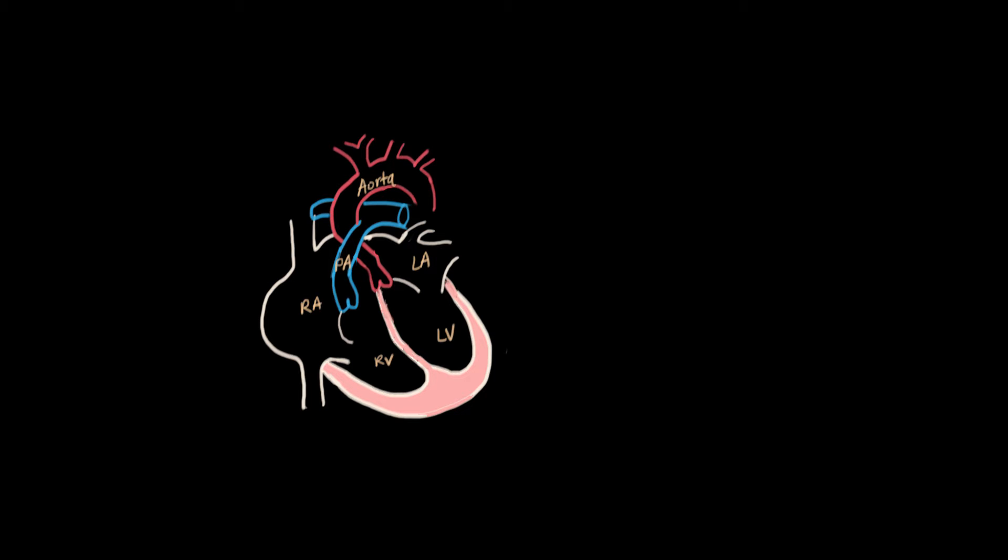In cyanotic heart diseases, we're talking about a right-to-left direction of shunting. The bluer, less oxygenated blood on the right side is going to the left side and out to the body. That's why we become blue or cyanotic.